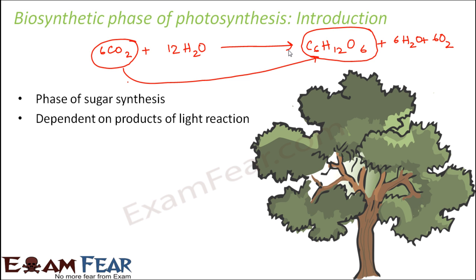Now this reaction depends on the products of light reaction. Now in order for this reduction to take place, so carbon dioxide basically gets reduced to form glucose, and for this reduction to take place it needs a lot of energy. And that energy comes from the ATP and the NADPH molecules which were produced in the light reaction. So they are dependent on the products of light reaction.